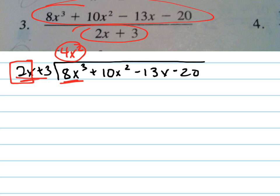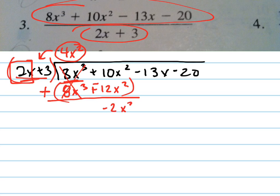So 4x squared, now I multiply this by that polynomial and write it underneath here. This is going to be 8x cubed plus 12x squared. Now I subtract those from each other and that goes away. This becomes negative 2x squared and I bring down the next term.